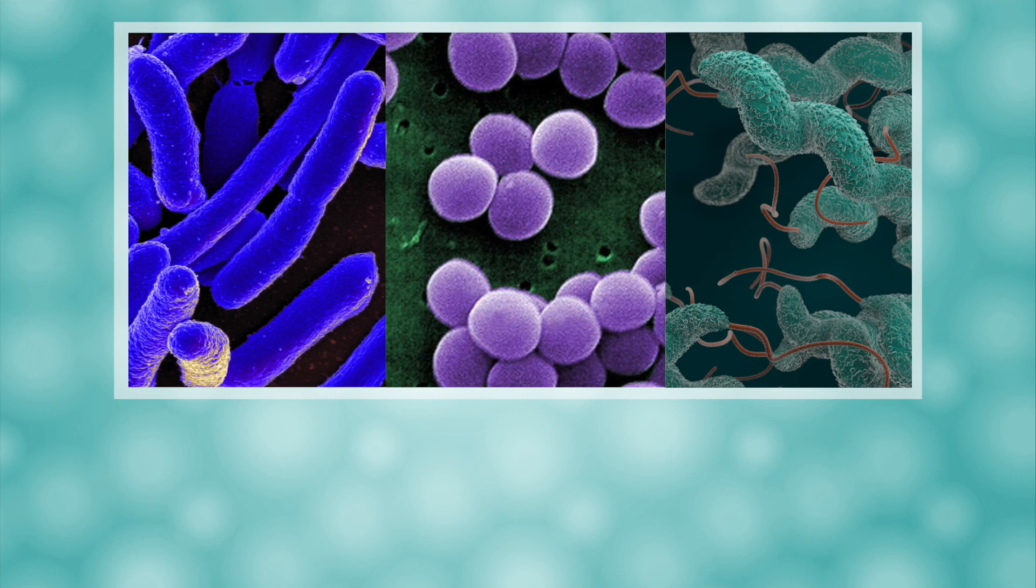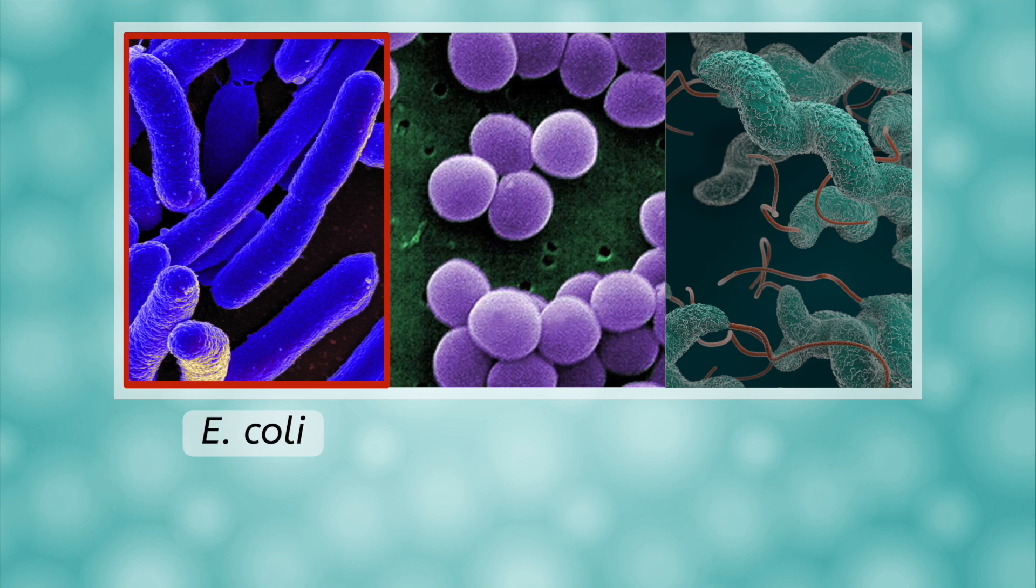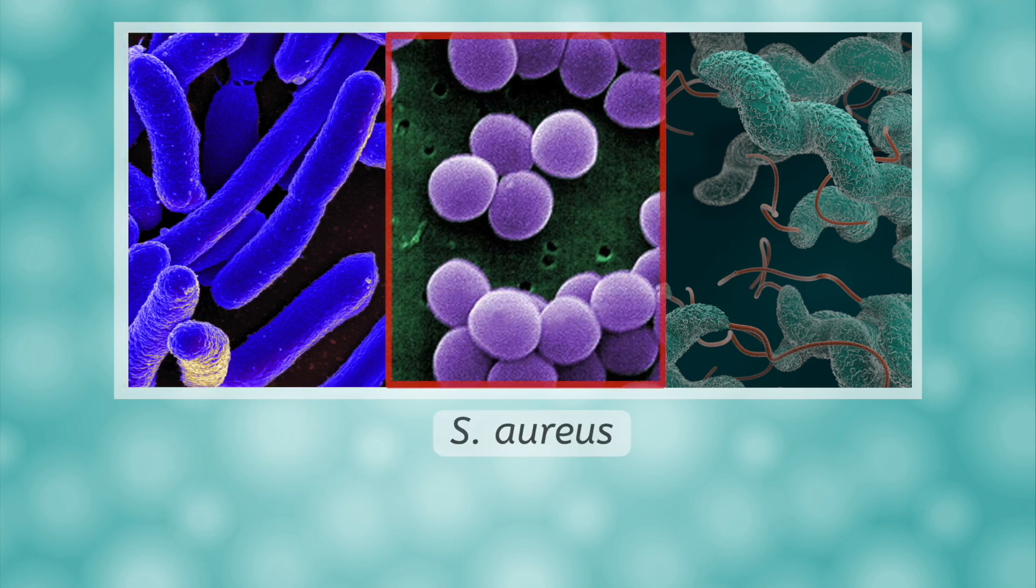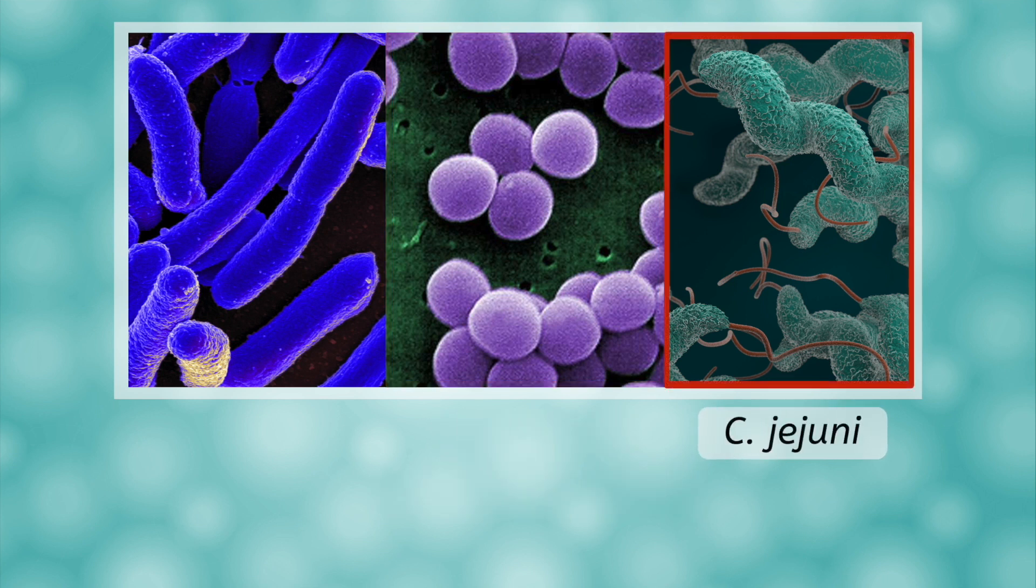Could you classify these three bacterial species by shape? Let's start with Escherichia coli. It has a long, skinny shape, so it is a rod, or bacillus, bacteria. Staphylococcus aureus gives us a hint right in the name, if the shape wasn't obvious already. It's a round, or coccus, bacteria. Campylobacter looks like a tiny, wiggly worm, so it's a spiral bacteria, or spirillum bacteria.